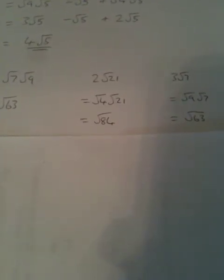Question number 3: which one is the odd one out, or which one is different? Rather than simplifying them, I'm going to go the other way and write them all as surds. So √7×√9 is √63. 2√21 becomes √4×√21. And 3√7 becomes √9×√7. Multiplying out, the one in the middle is √84; the other two are √63. Therefore, 2√21 is different.